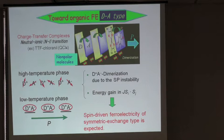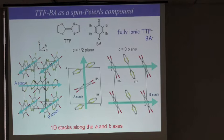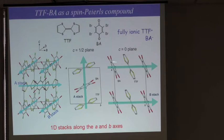One such example is TTF-bromanil — TTF is the electron donor and bromanil is the electron acceptor. This compound forms stacks with donor-acceptor one-dimensional chains. The pi-electron overlap is appreciable along this one direction, and each molecule is ionized hosting spin-1/2, so they interact with each other.